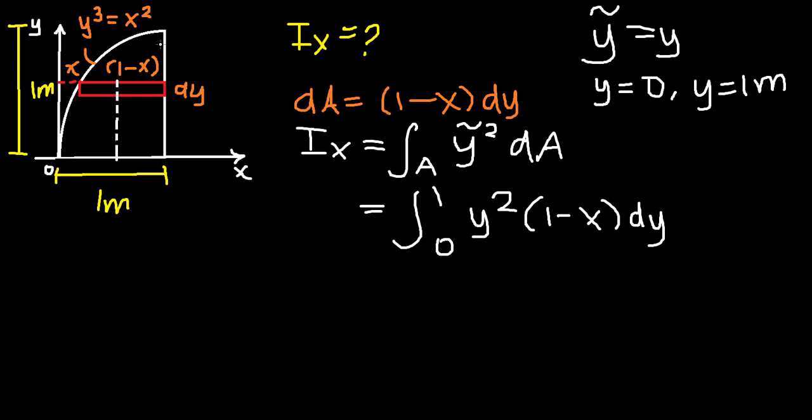We do have that over here: our y³ equals x². Let's rearrange to get it in terms of x. We basically root both sides, so we can get the square root of y³ equals x. Using this, we can substitute it in here to make it more uniform.